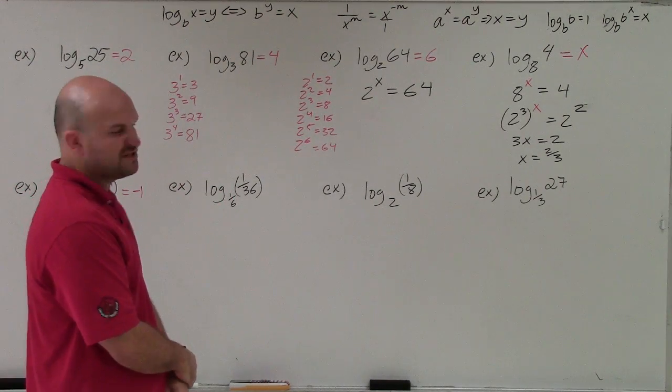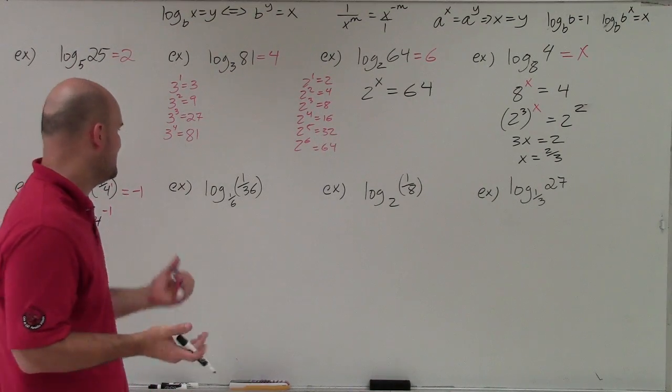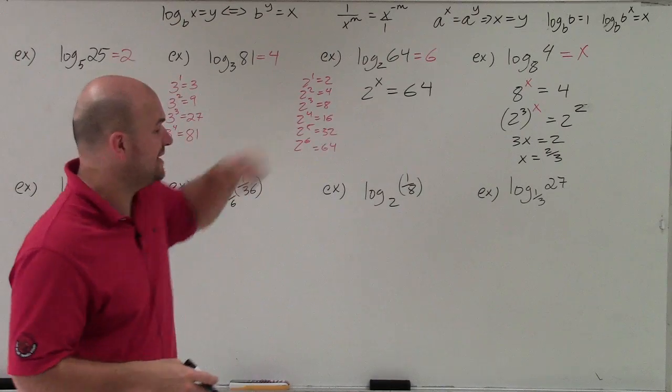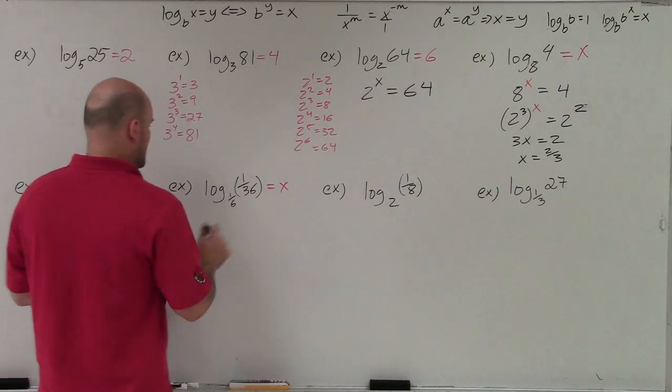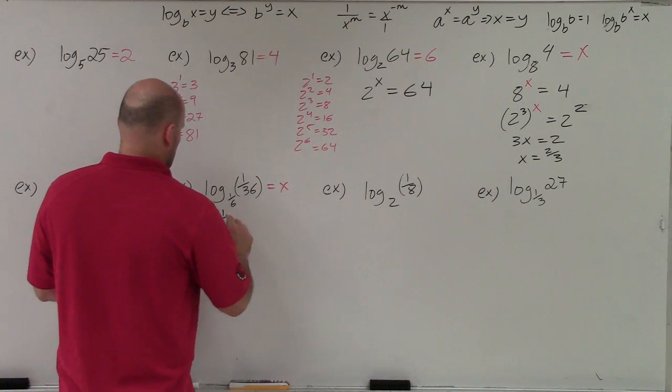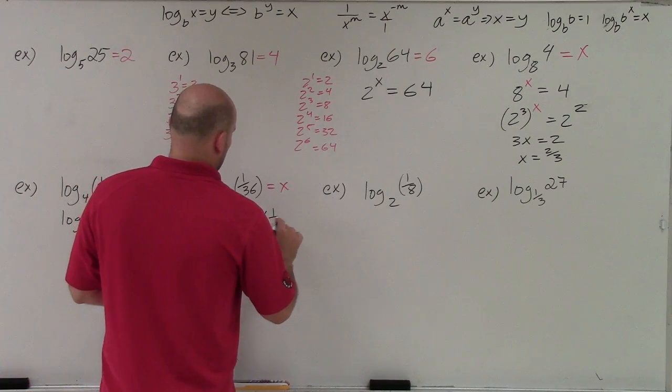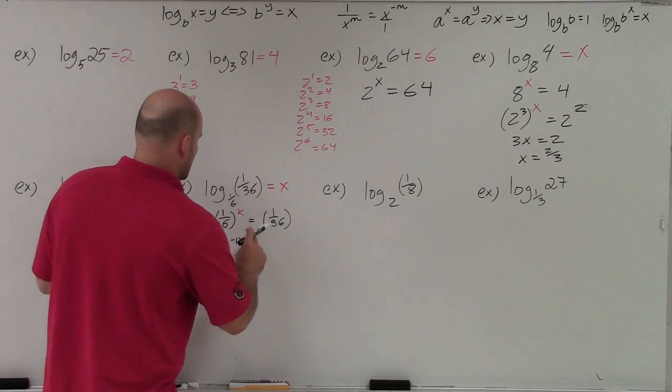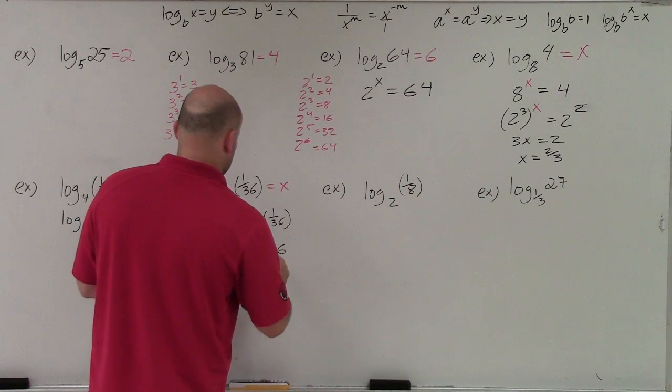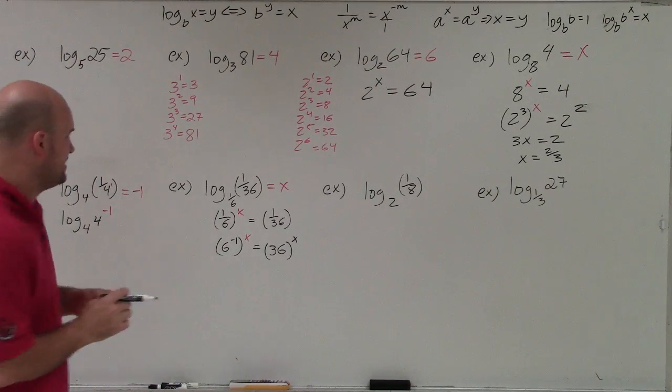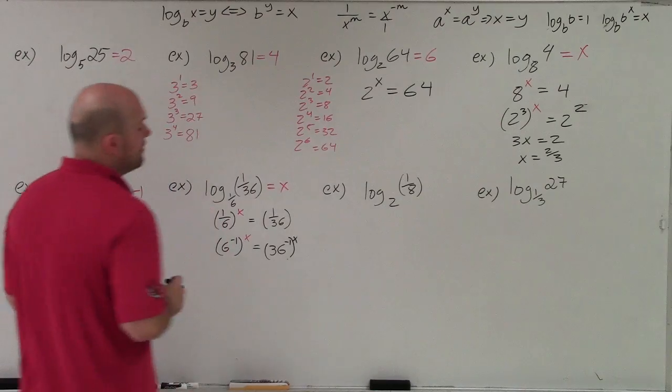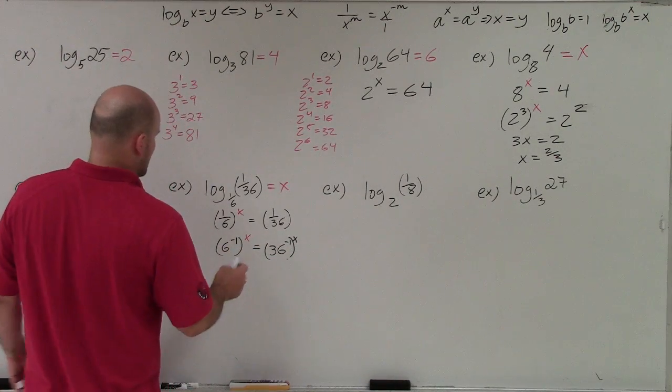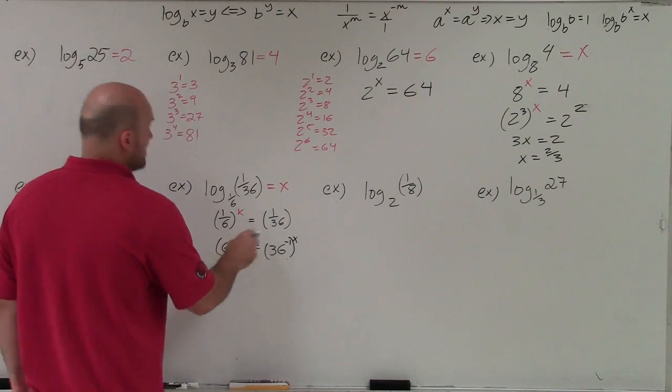This example might be a little bit confusing. I have fractions and fractions. I can rewrite them as negative powers. But again, what I'm seeing here is probably rewriting them in exponential form would probably make more sense for me. So I'm going to do 1 over 6 raised to the x equals 1 over 36. Now I'll use my negative powers. So I'll do 6 to the negative first raised to the x equals 36 raised to the x. Now I want to see can I rewrite 6 and 36 to the same base? Well, yeah. 6 squared is 36.